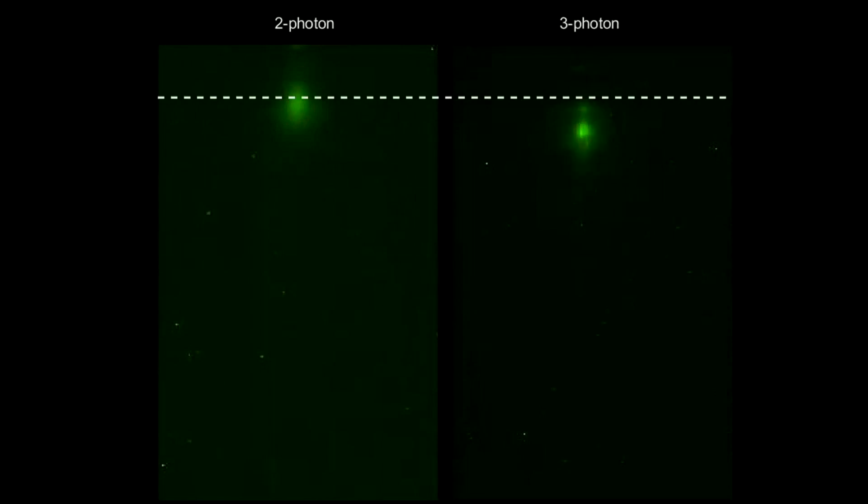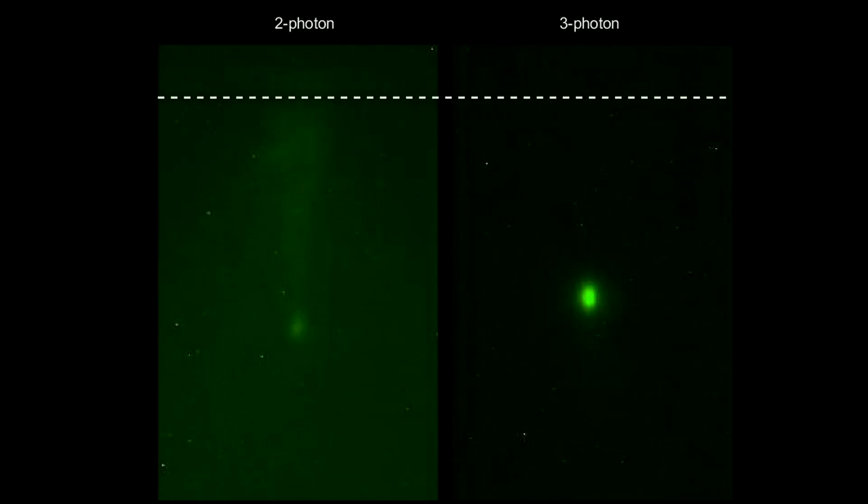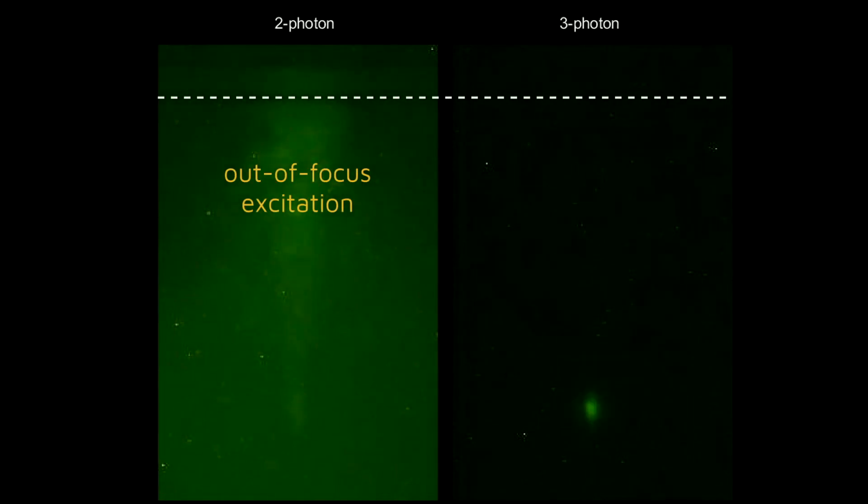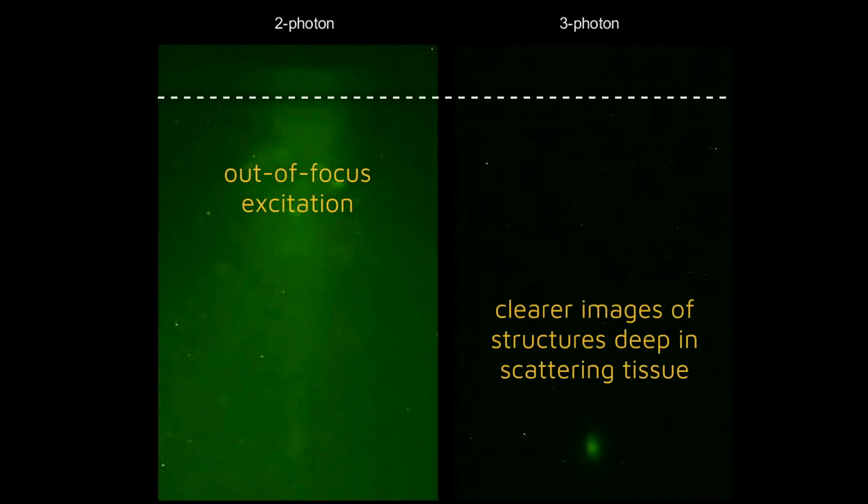With the use of three-photon imaging, one can solve this issue. Due to the light having a longer wavelength, three-photon microscopy is able to penetrate deeper into tissue with reduced out-of-focus excitation. This results in clearer images of structures deep in scattering tissue.